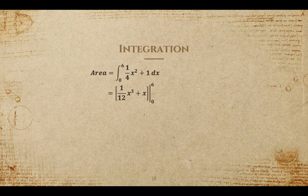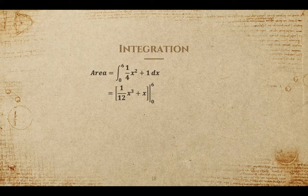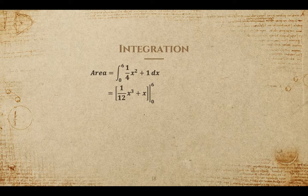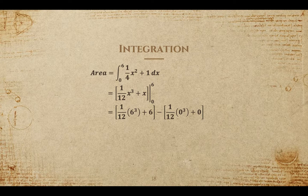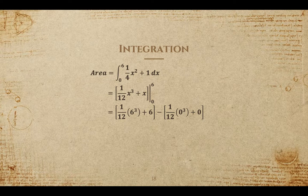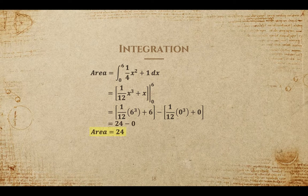So as you can see, I did the power rule on the screen. So we'll have 1/12 x cubed plus x evaluated from 0 to 6. So we'll plug in 6 for x. So we'll have 1/12 times 6 cubed plus 6. And we'll also plug in 0 for x. And we'll have 1/12 times 0 cubed plus 0. And we'll find the difference of those. So when we find the difference, we see that the actual area under the curve is 24 units squared.